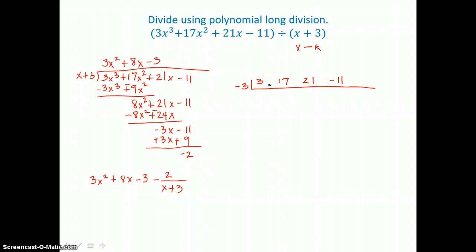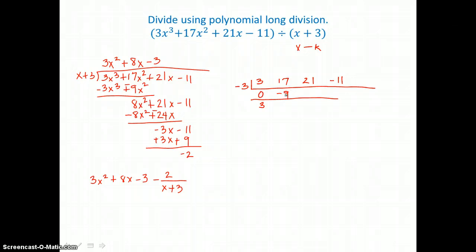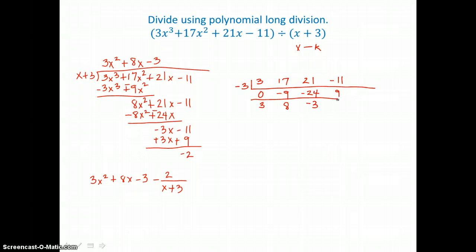Every degree is represented — 3, 2, 1, 0. We put down a 0 and add the first column. Multiply: negative 3 times 3 is negative 9. Add, getting 8. Multiply: negative 3 times 8 is negative 24. Add. Multiply: negative 3 times negative 3 is positive 9. When I add, I find a remainder of negative 2.